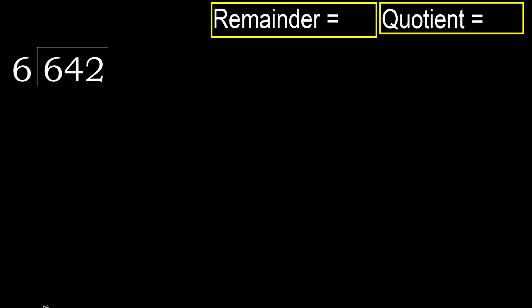642 divided by 6. 6 is not less, therefore work with 6. 6 multiplied by which number is nearest to 6 but not greater? 6 multiplied by 1 is 6, which is not greater. Subtract: 6 minus 6 equals 0.